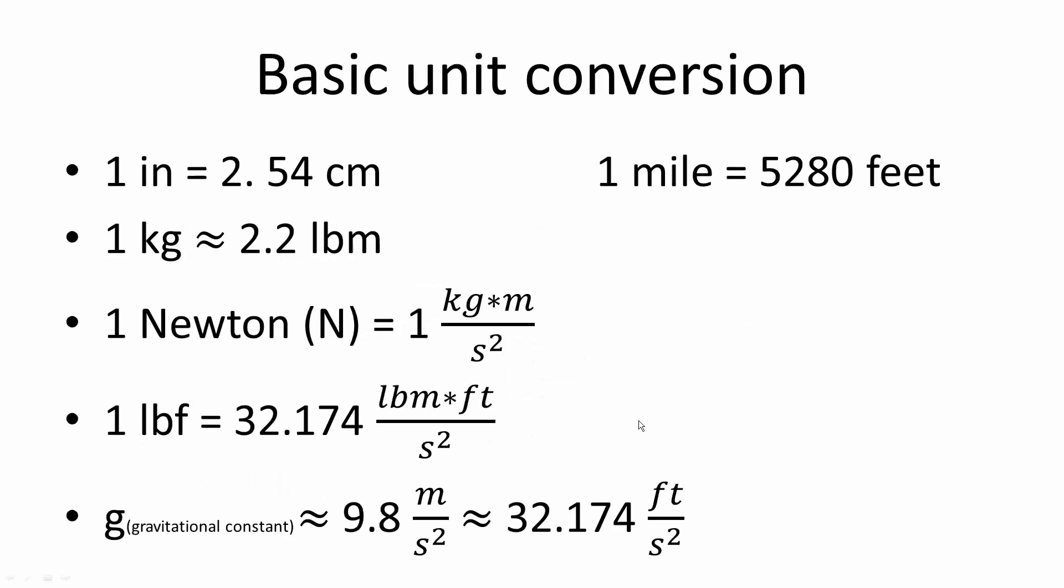Now, some basic unit conversions that you should probably memorize. 1 inch is 2.54 centimeters, 1 kilogram is about 2.2 pounds, 1 mile is equal to 5,280 feet, and 1 newton is equal to 1 kilograms times meter divided by seconds squared. This is essentially saying that the units for newton is equivalent to kilograms times meter divided by seconds squared.